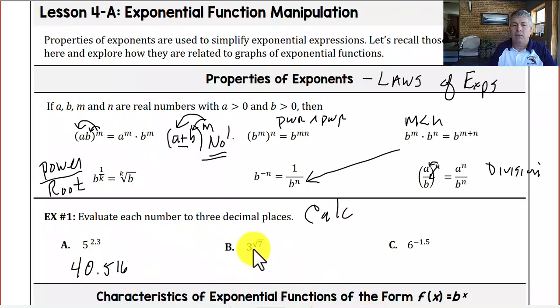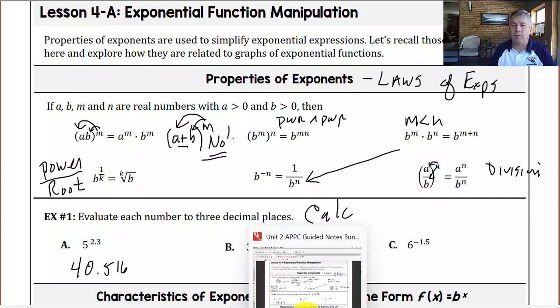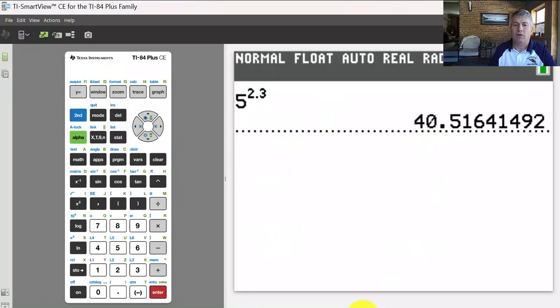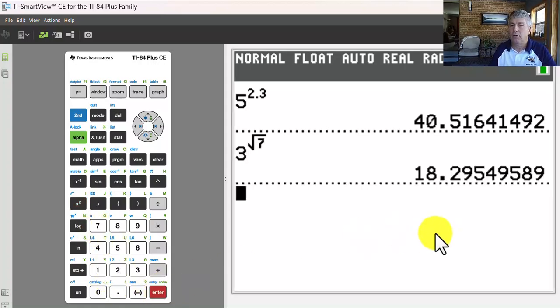In example b, 3 raised to the square root of 7, we're going to do the same kind of thing. Go to our calculator, we'll take our base 3 and do our caret, and we'll raise to the square root of 7. So the square root key is above the x squared, so 2nd square root of 7, enter, and we get 18.295.